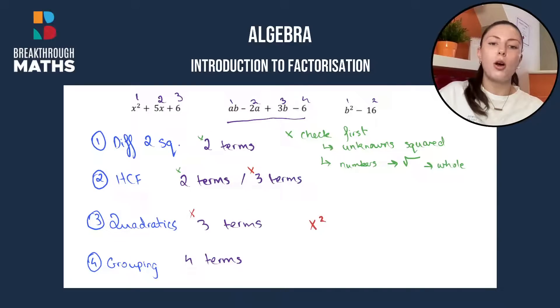Well quadratics will always have an x squared, an x, and a number by itself or for example a b squared, a b, a number by itself, an a squared, an a, a number by itself and so on.